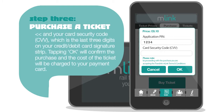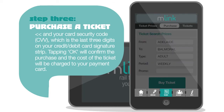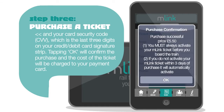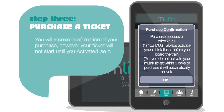You will also need your card security code, CVV, which is the last three digits on your credit or debit card signature strip. Tapping OK will confirm the purchase, and the cost of the ticket will be charged to your payment card. You will receive confirmation of your purchase, however your ticket will not start until you activate or use it.